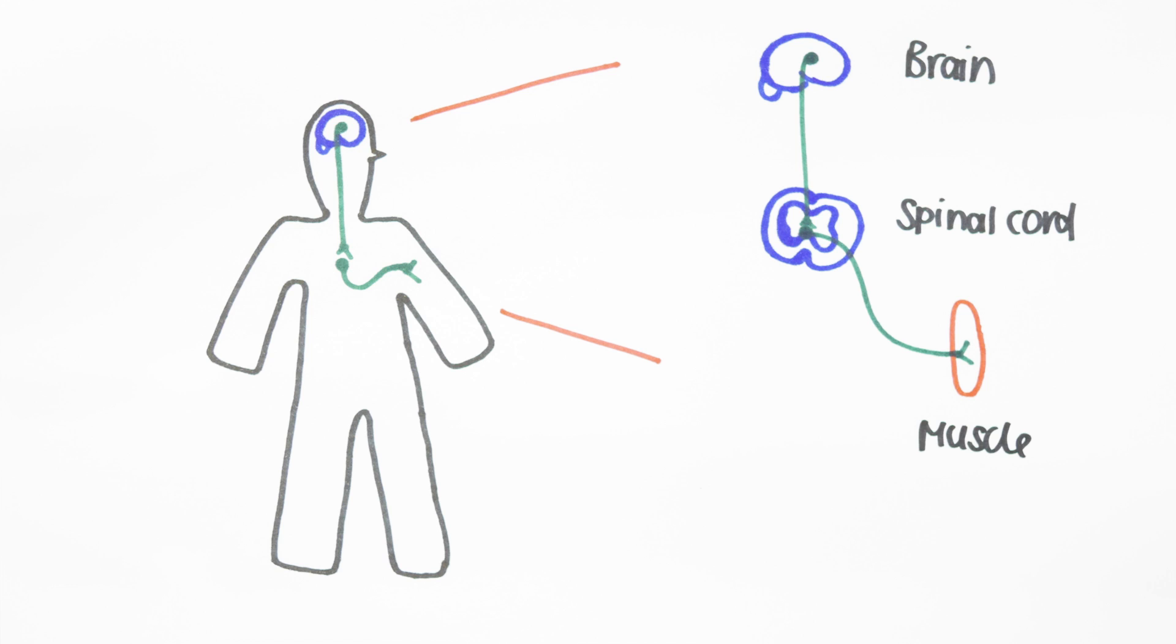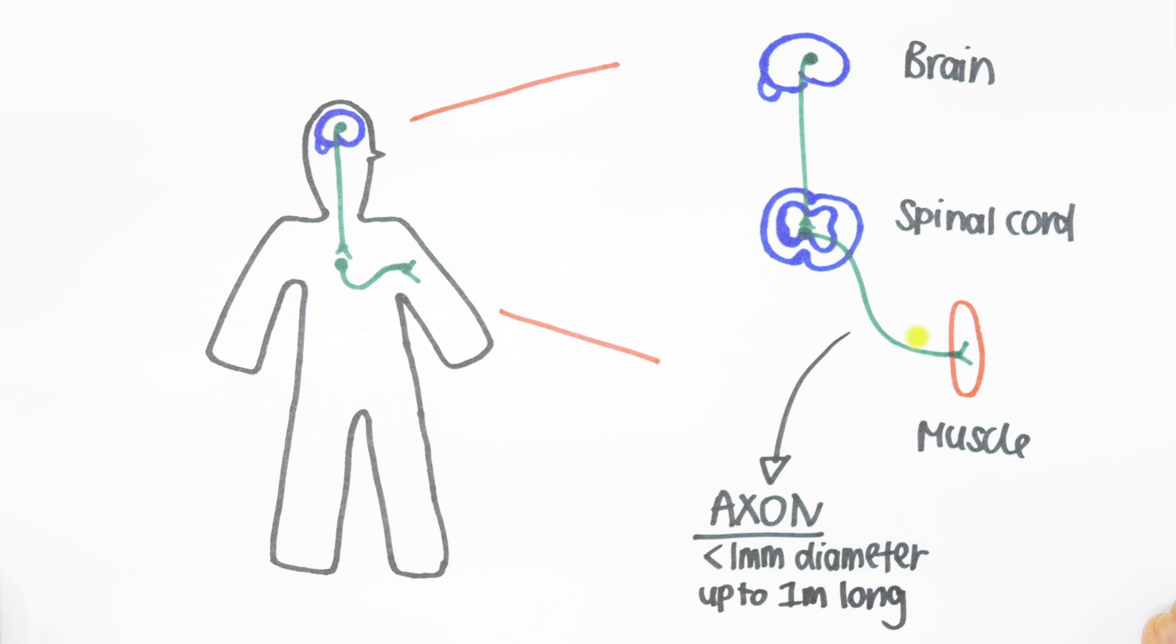These three parts communicate with one another via slender cable-like nerve cell extensions called axons. Axons wire up our body and pass on messages at high speed in the form of nerve impulses. Axons are less than one millimeter in diameter but up to a meter long in humans and these delicate structures need to be maintained for an organism's lifetime.